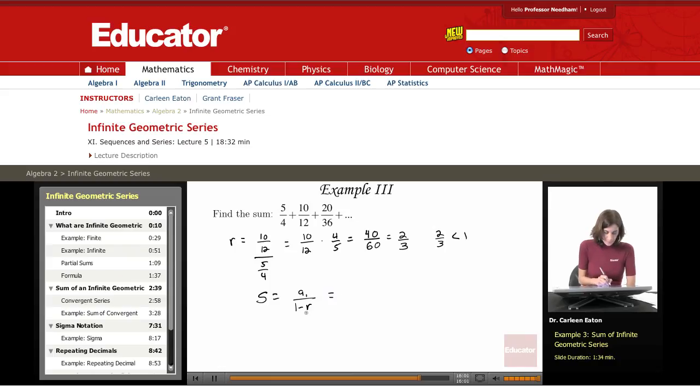Okay, the first term. The first term is 5 fourths. I'm dividing that by 1 minus 2 thirds to get 5 fourths divided by 1 third.